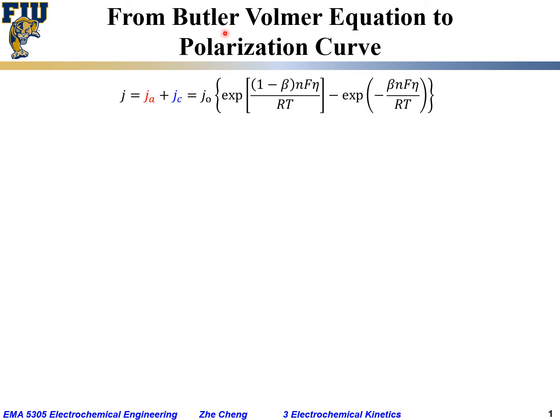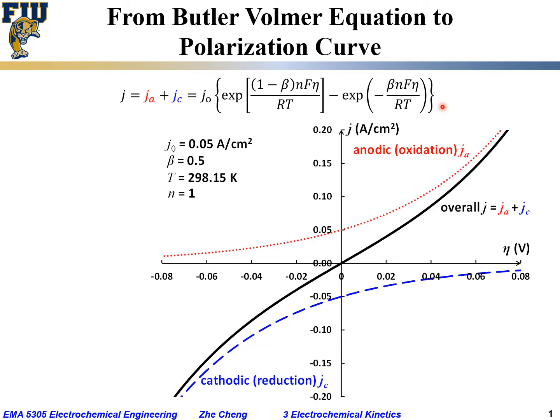We have talked about the Butler-Volmer equation under cathodic and anodic bias conditions and at equilibrium. But what would we get as a polarization curve if we actually plug some numbers into the Butler-Volmer equation? This is the simplified form of the Butler-Volmer equation — remember, it applies only under the assumption of no mass transport limitation, which means you actively stir or keep the current density very low.